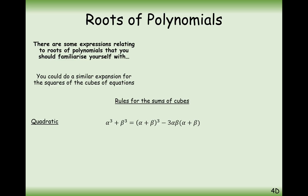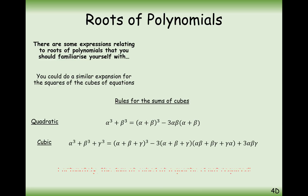Rules for cubes: this is slightly different. If you were to expand alpha plus beta cubed, you would get alpha cubed minus three alpha beta times alpha, minus another three alpha beta times beta — which you can factorise together — and then plus beta cubed. The formula for the sum of cubes is that expression. Fortunately, the sum of the cubes for a quartic is not required. The way I would remember it is not by memorising formulas, but by expanding alpha plus beta plus gamma cubed and seeing how to simplify what's left over.